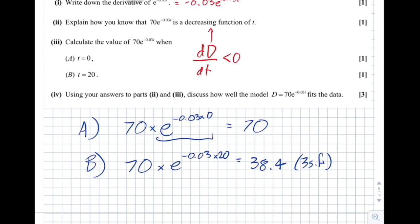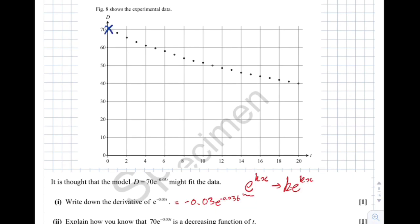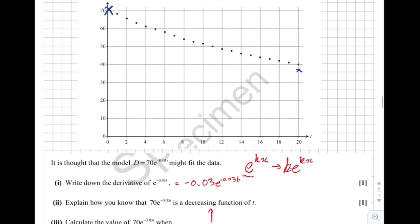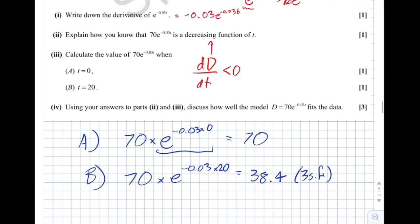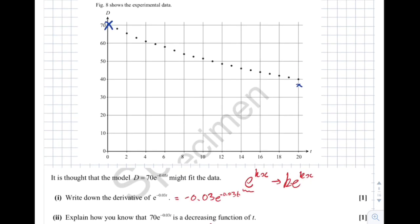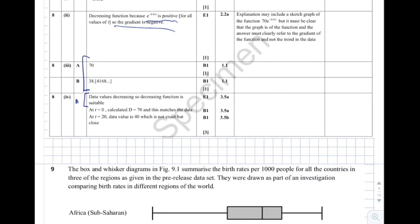Discuss how well the model fits the data using your answers. We've substituted two t values to get two d values. When t equals 0 we got 70, which fits the data exactly. When t equals 20 we got about 38.4, and the mark scheme notes the data value is about 40 — not exact, but close. The mark scheme also says reference the decreasing function result from part 2: since we showed the function is always decreasing and the data is also decreasing, that aspect of the model is suitable.